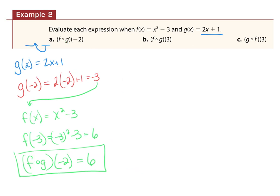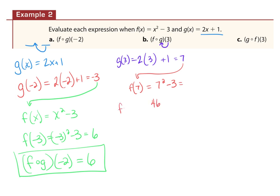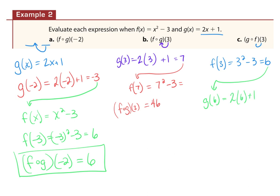Order matters with composition. For f of g of 3: put 3 into g first — 2(3) + 1 = 7 — then put 7 into f: 7 squared − 3 = 49 − 3 = 46. For g of f of 3: put 3 into f first — 3 squared − 3 = 6 — then put 6 into g: 2(6) + 1 = 13. You get different answers, so order matters.